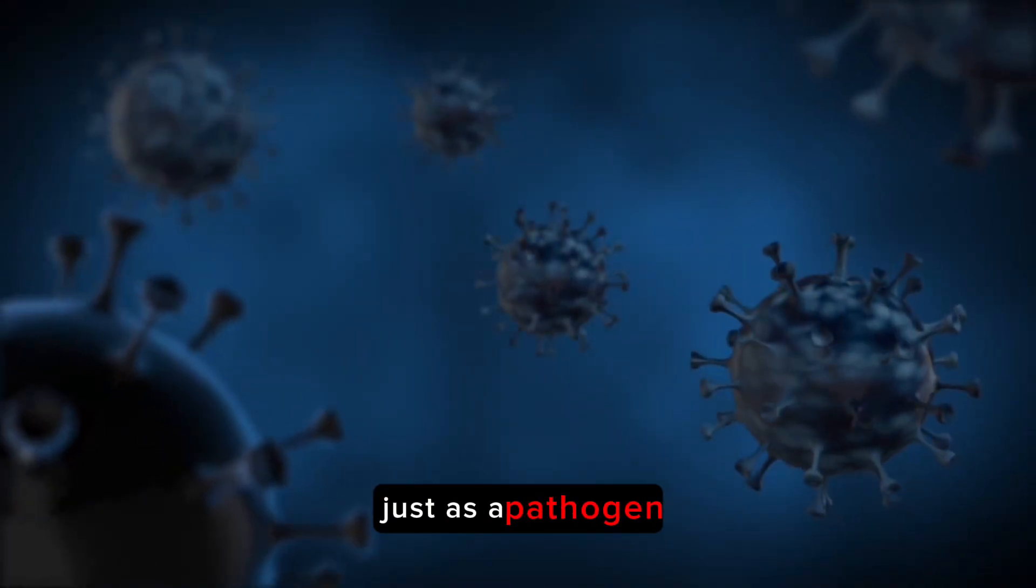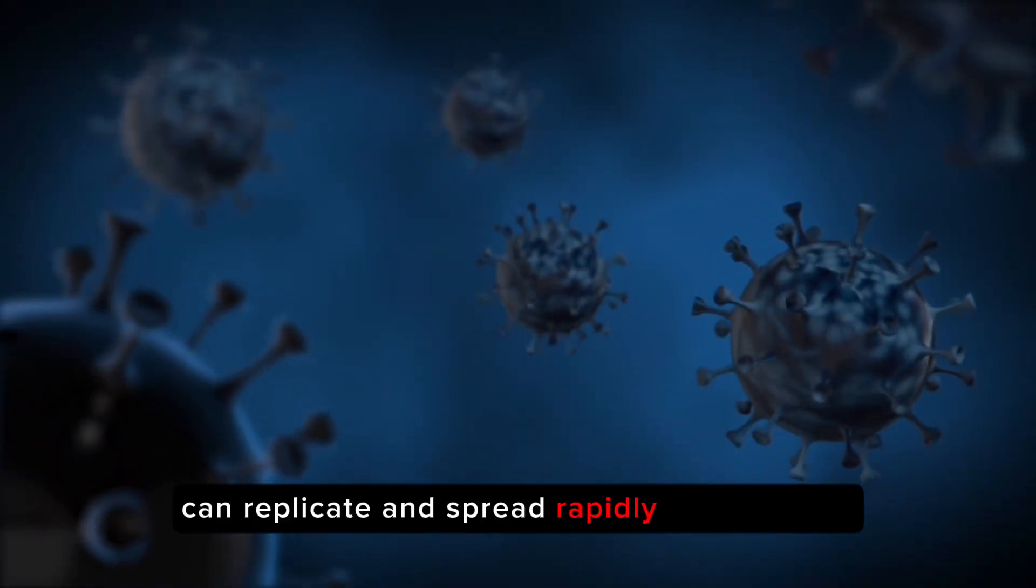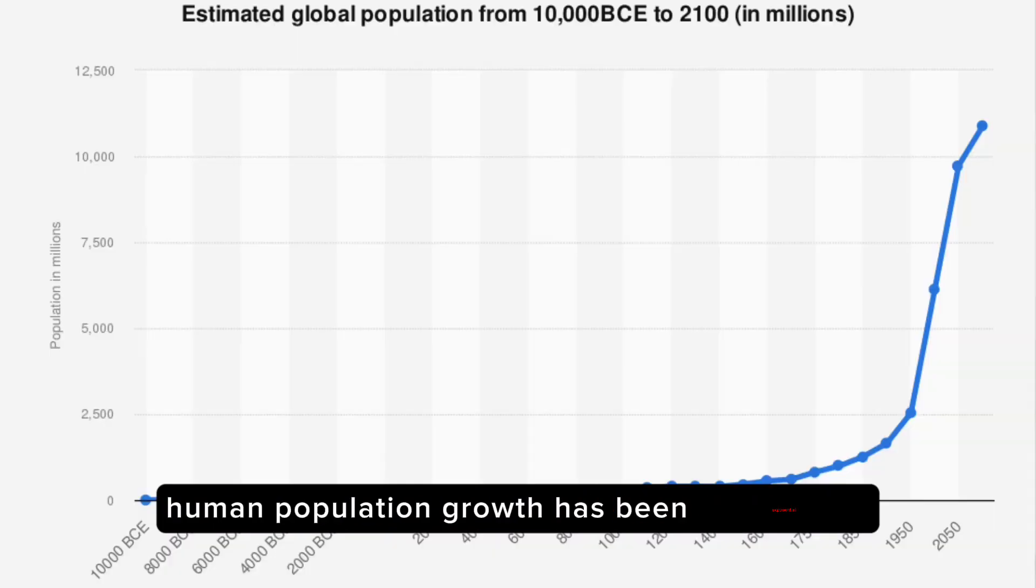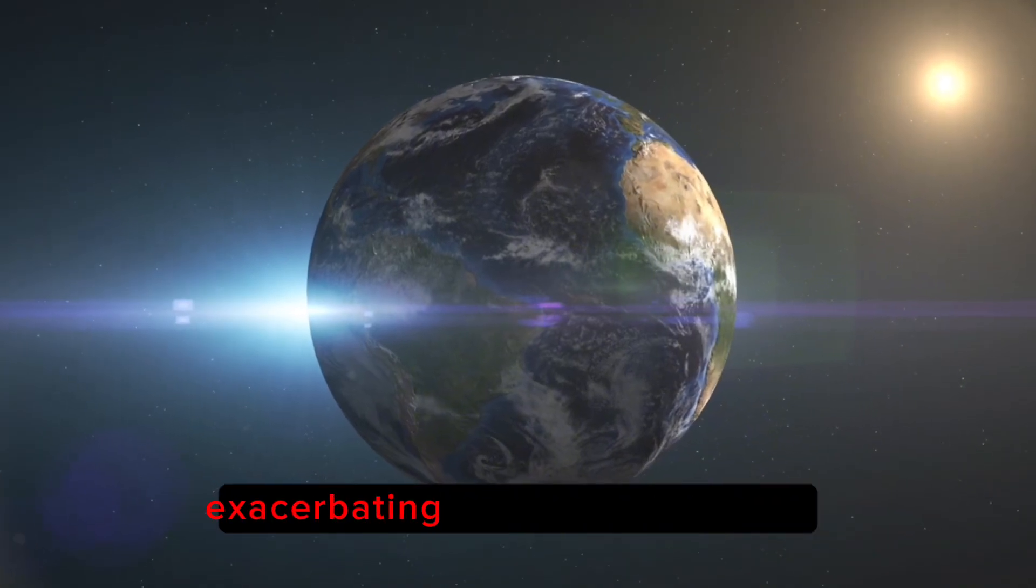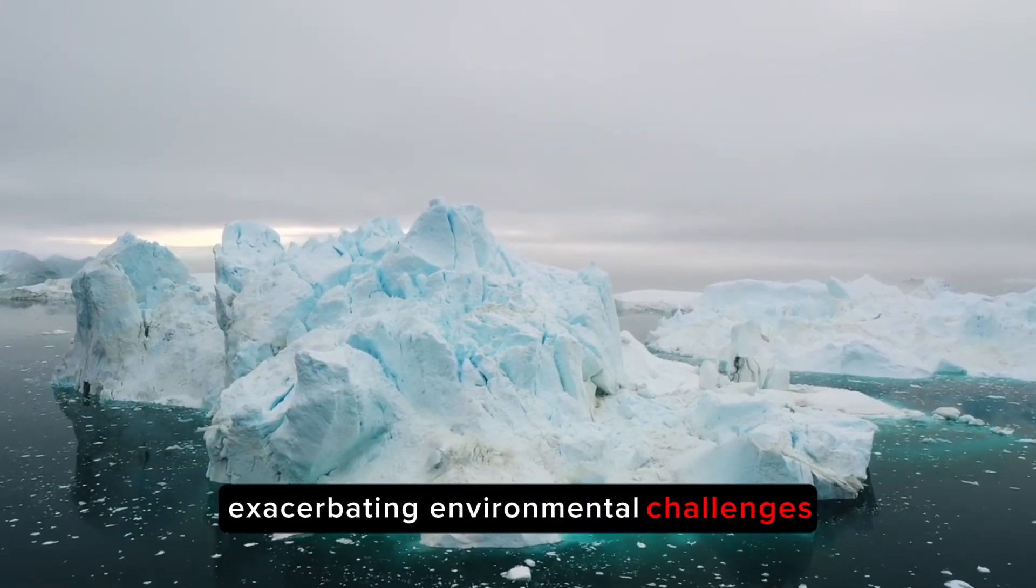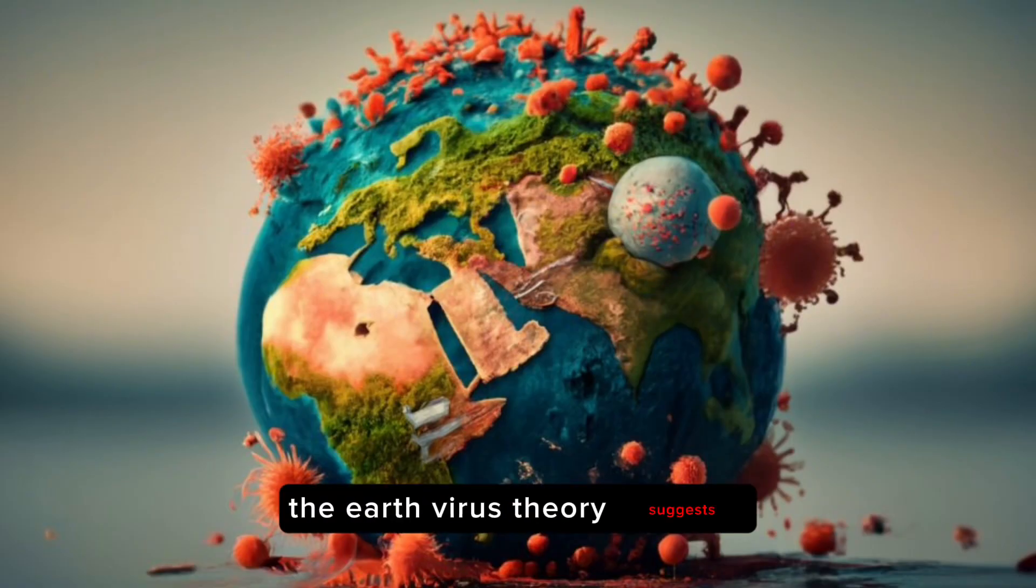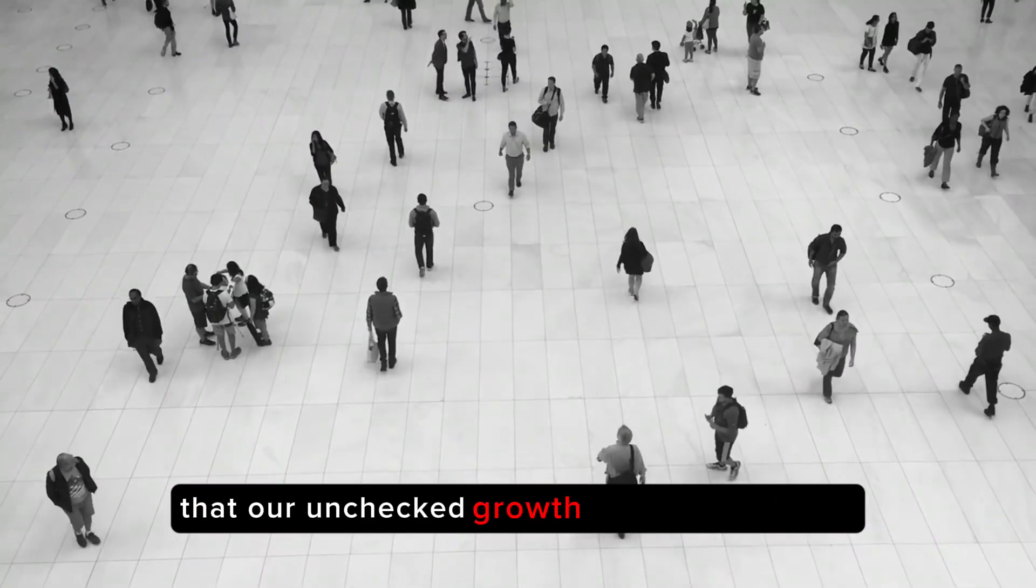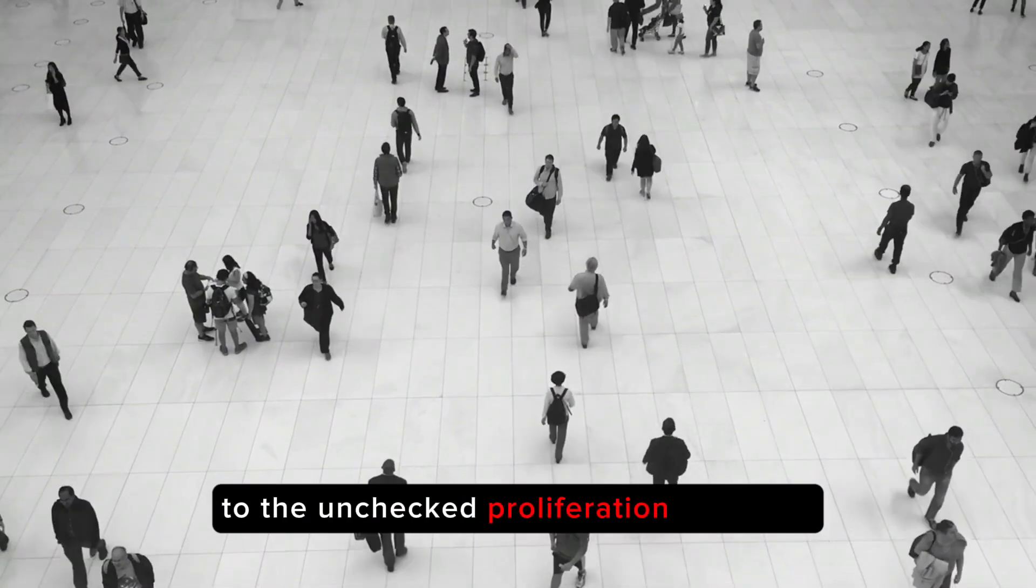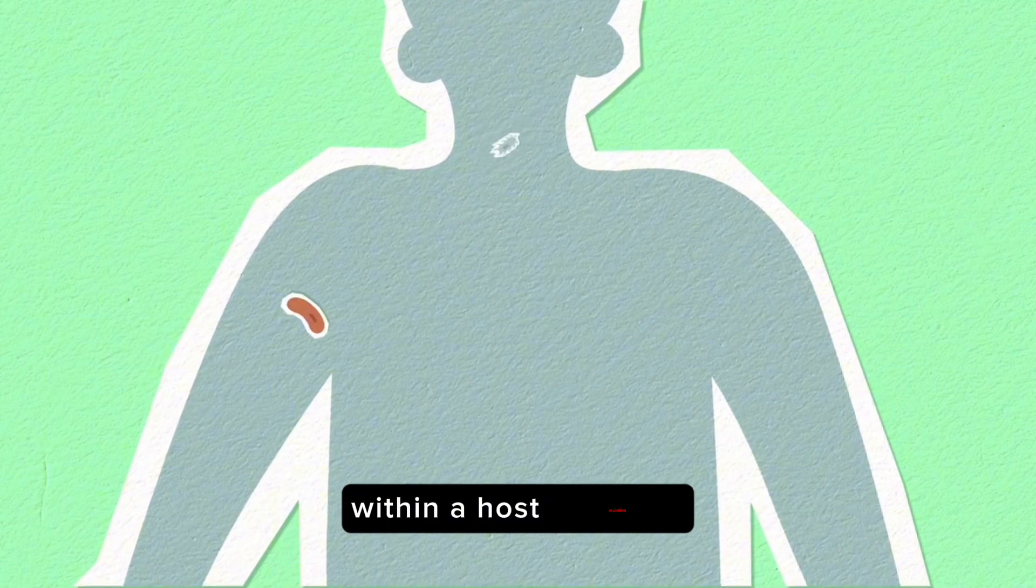Just as a pathogen can replicate and spread rapidly within a host, human population growth has been exponential. This places immense pressure on Earth's resources, exacerbating environmental challenges. The Earth virus theory suggests that our unchecked growth may be analogous to the unchecked proliferation of a virus within a host organism.